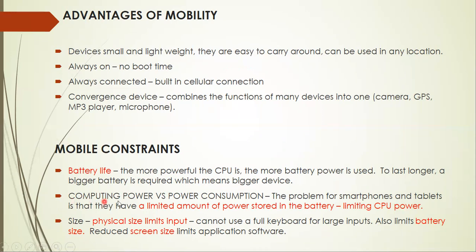For a more powerful device, if you need a powerful CPU, it is going to consume more power. The problem for smartphones and tablets is that they have a limited amount of power stored in the battery, limiting your CPU power. Another constraint is size — a smaller device means a smaller battery, and the physical size also limits input.